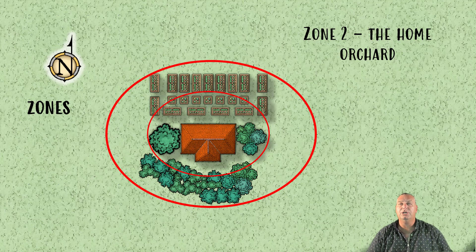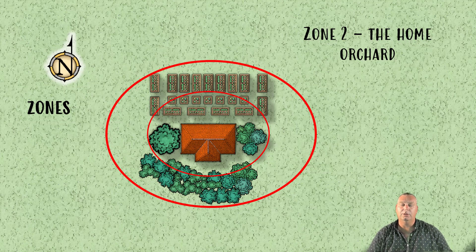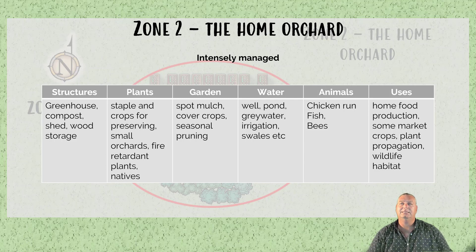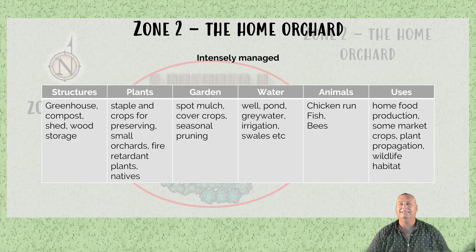Then we get into zone 2, which is the home orchard system. We're going into this space about once a week to three or four times a month, depending on the maintenance required. It's intensely managed. Structures could include a greenhouse, compost, a shed, and wood storage for cooking or heating. The plants going into that space include stable crops for preserving, small orchard systems or fire-retardant trees to protect zone 1 and zone 0, as well as natives for habitat and beauty.